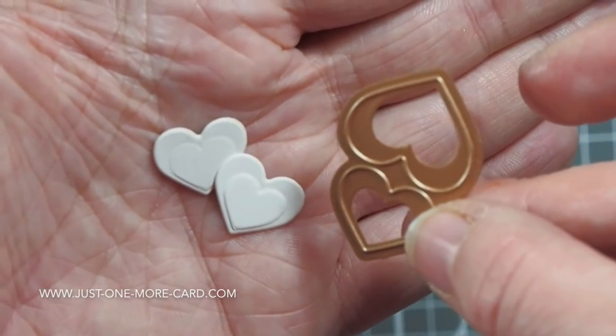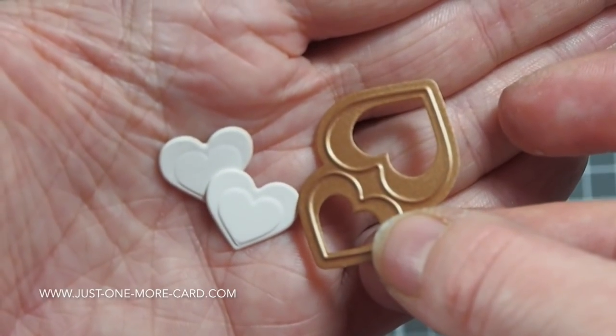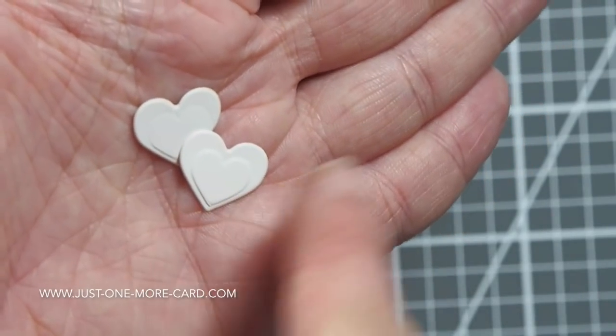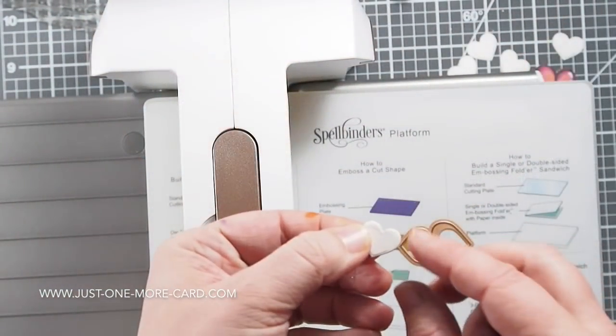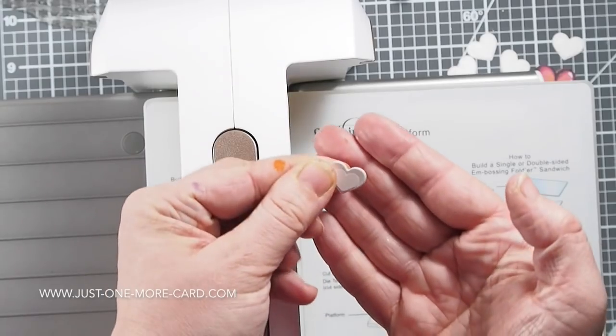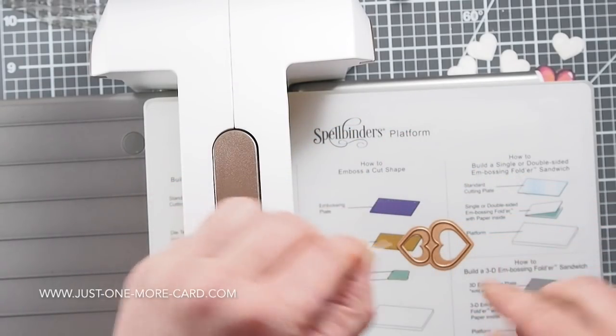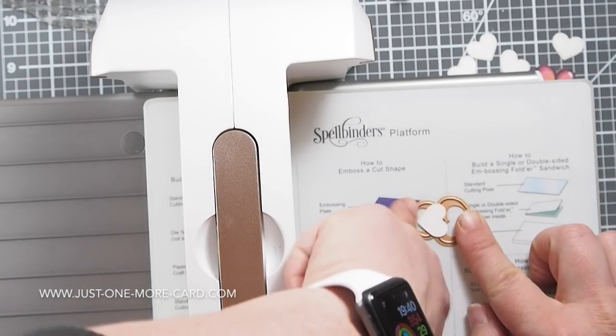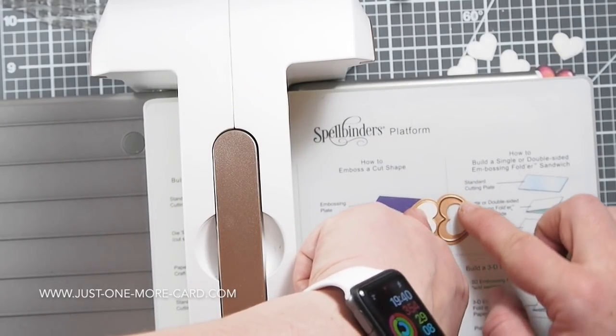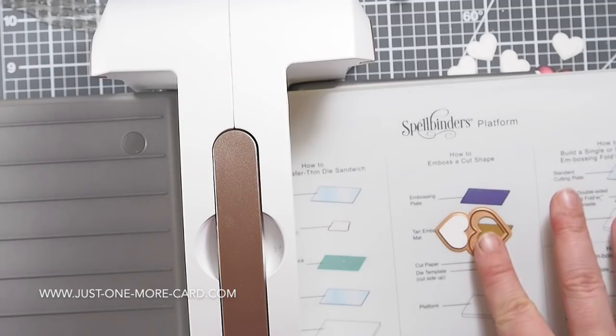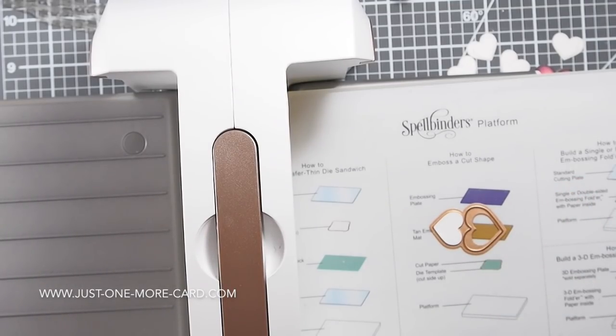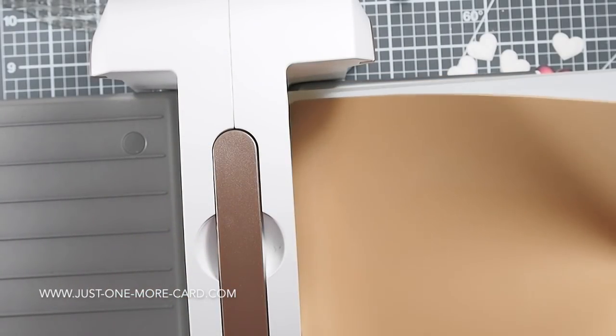Now here's how to do the embossing with the Spellbinder dies: you take the die cut, you fit it back into its die face down. Then you grab the Spellbinder tan embossing mat, which comes with the machine—it's not an extra purchase, you can purchase it extra but it already comes with the machine—and the embossing plate, which also comes with the machine.